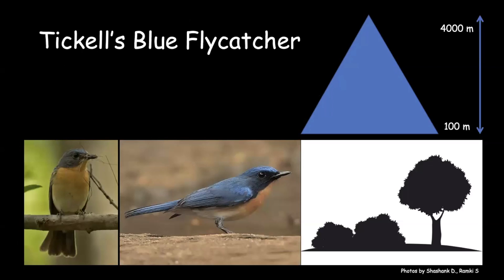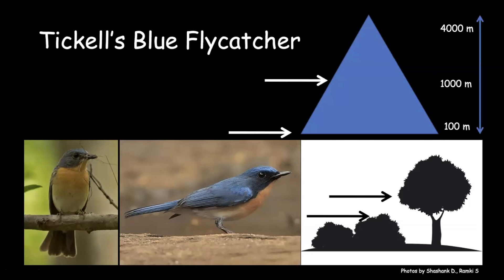Tickell's blue flycatcher is one of our most common regular birds in peninsular India. It is very distinct — the throat is not blue, it's just orange. This is a male; females do have blue but are much more drab in color. This female had actually nested in an electricity box in Bangalore. You can see them from sea level up to about 1,000 meters, always in undergrowth or mid-canopy.